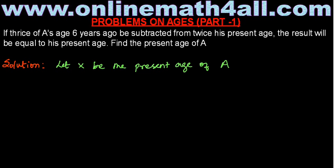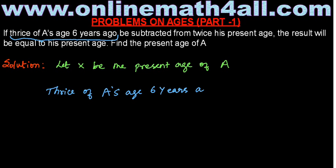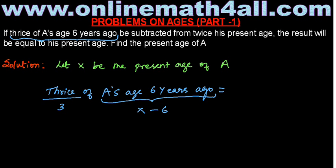Now I am going to use the information given in the question. The first term I am going to consider is: thrice of A's age 6 years ago. I am going to write this term in terms of X. For the word thrice, I write 3. For A's age 6 years ago, students may have a question about how to write that.